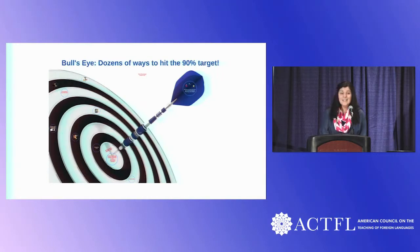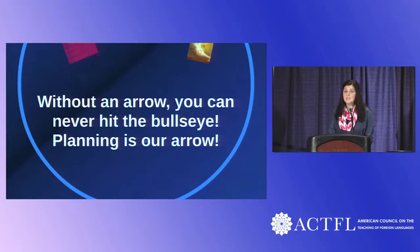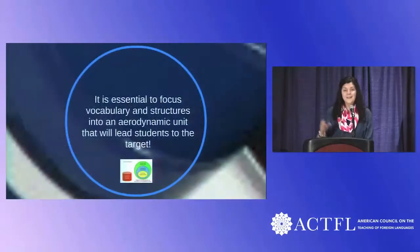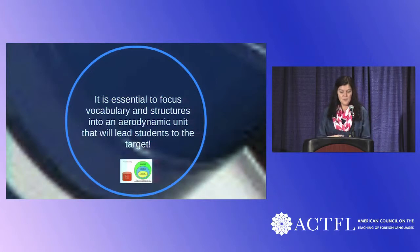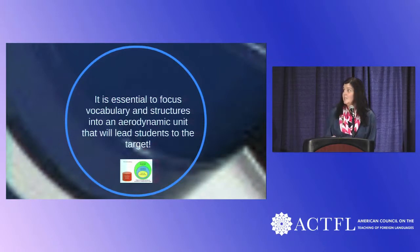The key, if you look at our bullseye, is that if we don't have an arrow, we can't even hit the bullseye. It's planning that's really the arrow that's going to take us to that center — that bullseye of good proficiency from our students. That stem of the arrow: in your planning, you have to be able to focus on vocabulary and structures that are going to be aerodynamic and form a tight unit that will lead your students to the target.